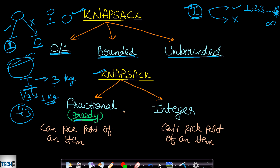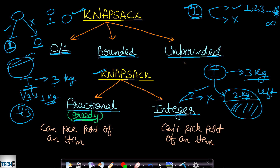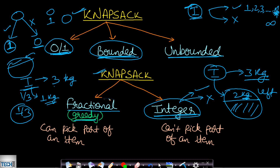Fractional knapsack can be solved using a greedy algorithm and does not fall under dynamic programming. In an integer knapsack, we cannot pick a fractional part of an item — we must include the entire item or exclude it completely. In real life, knapsacks are generally of mixed types: a 01 knapsack is also an integer type knapsack. You can have bounded with integer, or bounded with fractional knapsack combinations.